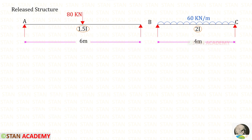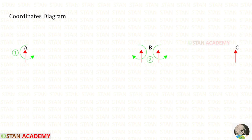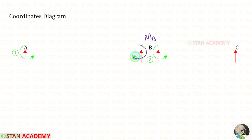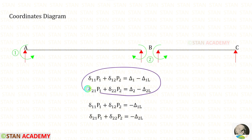When we remove both moments, the continuous beam becomes two separate simply supported beams. Now let us draw the coordinates diagram, keeping MA as the first coordinate and MB as the second coordinate. We assume both of them are hogging moments. About AB, MA would be acting in the anticlockwise direction, and about BC it would also be acting in the anticlockwise direction. Since there is no external moment or rotation at points A and B, delta 1 and delta 2 will be 0.